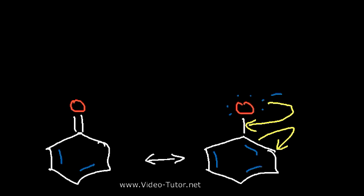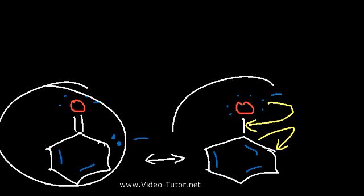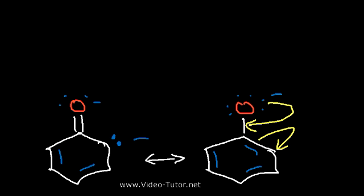Now, the resonance structures that we drew for the acetate ion, those structures were equivalent. They were the same. But notice that these two resonance forms, they're not the same. One is more stable than the other. And when you get into a situation like that, sometimes you need to identify which one is the major resonance contributor and which one is the minor resonance contributor. The major resonance contributor is the resonance form that's more stable. So looking at these two resonance forms, which one is more stable? Is it better to put a negative charge on a carbon atom or an oxygen atom?